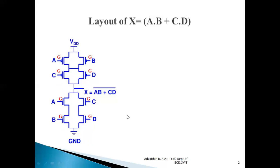Now, what we have done is we have named the terminals and named the transistors — pMOS transistors and nMOS transistors. We have four pMOS transistors and four nMOS transistors, as counted and shown in the figure. For this particular circuit, let us try to implement the layout diagram.